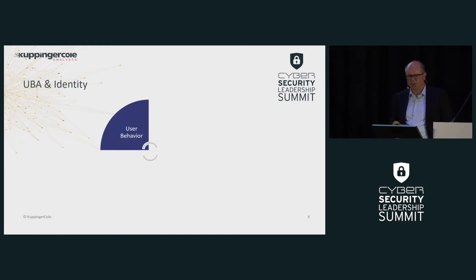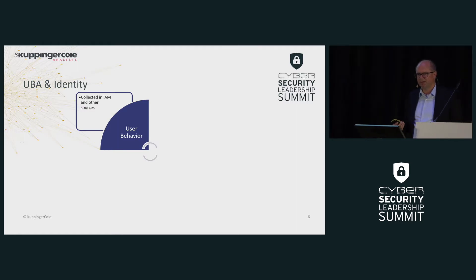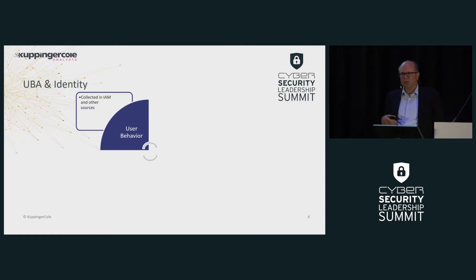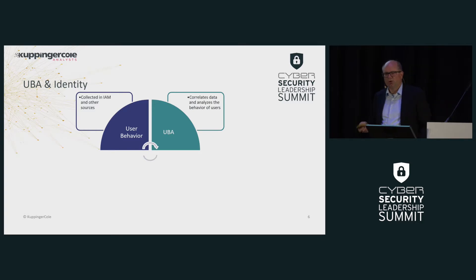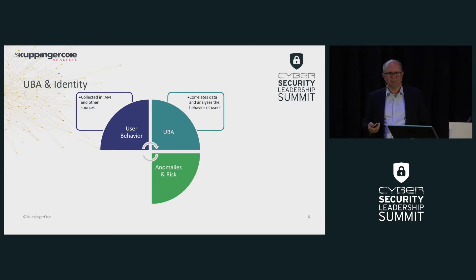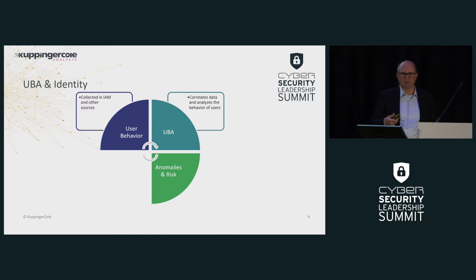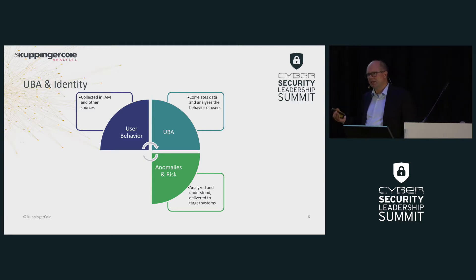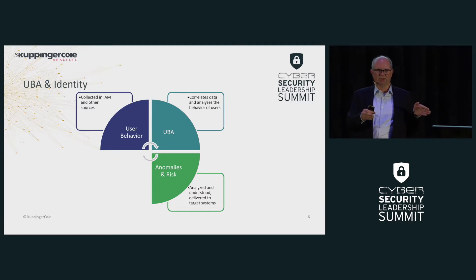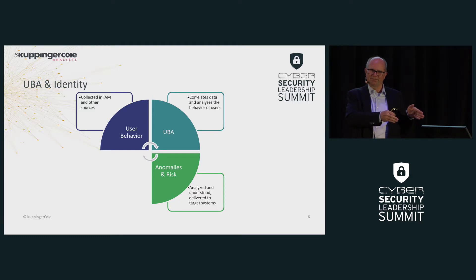So, UBA and identity — what does it really mean? We have user behavior, we collect data in IAM and other sources, and we use UBA technologies to correlate the data and analyze the behavior of the user. As a result, we end up with anomalies and risk — data analyzed and hopefully understood. We then deliver that information to target systems. Every good security technology not only identifies what is going wrong, but makes it actionable.